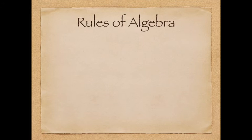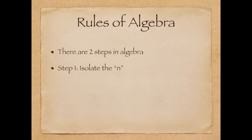All right, let's go over our rules of algebra one more time. Remember that there are two steps in algebra. Our first step is to isolate the n, get the n all by itself. And then in this last one, when we were doing multiplication, you were looking for just one n.